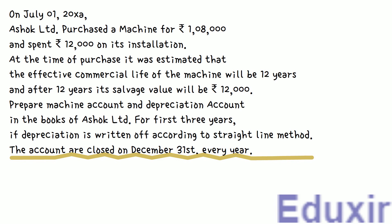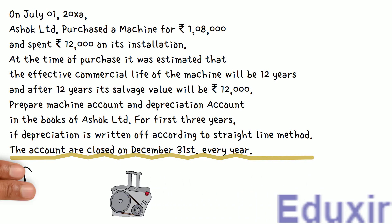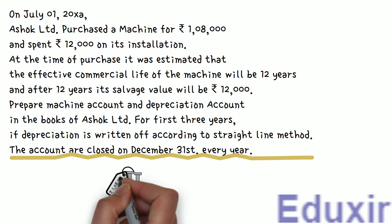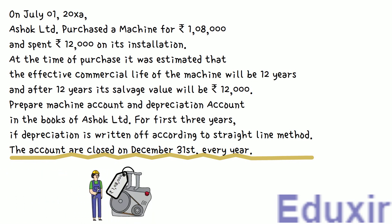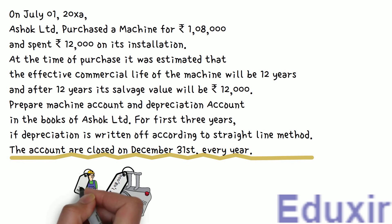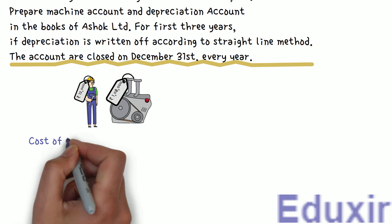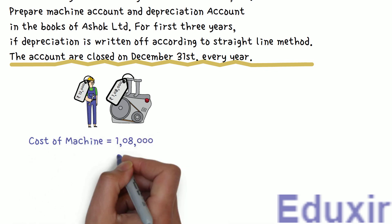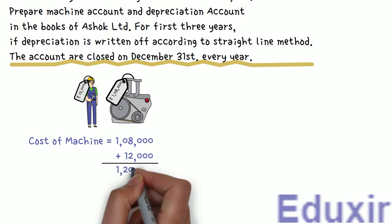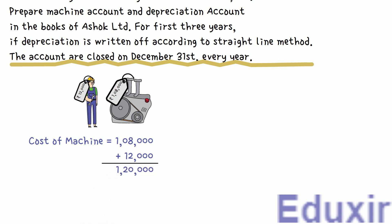In this problem, the machine cost is ₹1,08,000. The machine also required installation and the business paid ₹12,000 for installation. As you know, the amount spent on installation is considered capital expenditure and forms part of the cost of the machine. So the final cost of the machine will be ₹1,08,000 plus ₹12,000, which equals ₹1,20,000. When these expenditures are made, the machine asset is increasing, so we should debit the machine account.